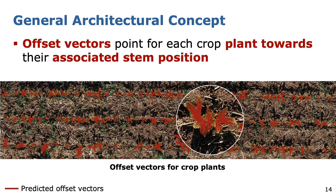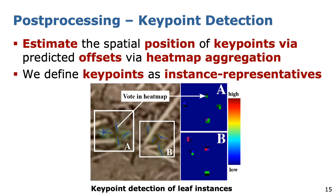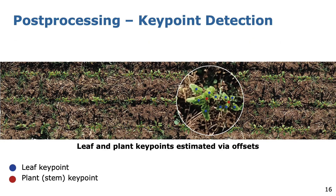Next, we exploit both offset predictions of our network to perform an automated post-processing procedure to compute the final leaf and plant instance segmentation. First, we rely on the predicted offset vectors of crop leaves to estimate the spatial position of leaf keypoints and define these keypoints as instance representatives. During this procedure, we aggregate a heatmap where each pixel of a crop leaf, translated by its associated offset vector, casts a vote to its position. Accordingly, a high number of votes in the heatmap indicates the position of a leaf keypoint as illustrated on the right-hand side. We perform the same procedure based on predicted offset vectors of crop plants to estimate the spatial position of stem keypoints, which are representatives of plant instances. We show the location of predicted leaf keypoints and stem keypoints illustrated by blue and red circles respectively.